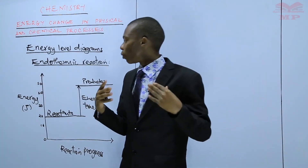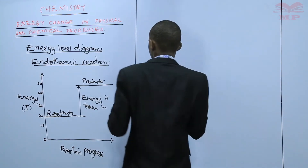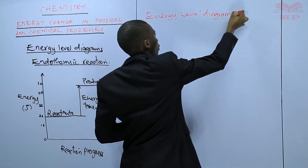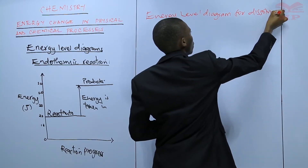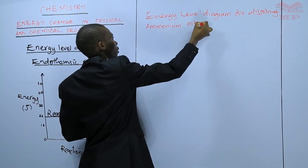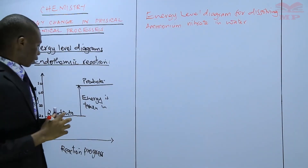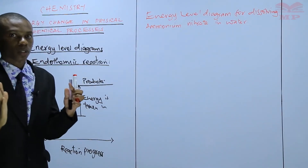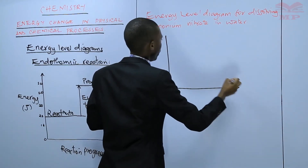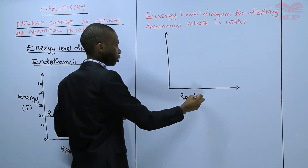If we were to draw our energy level diagram to show an endothermic reaction, the energy level diagram for dissolving ammonium nitrate will look like this. This is the y-axis, then you have the x-axis. On the x-axis, you have the reaction — the reaction progress.